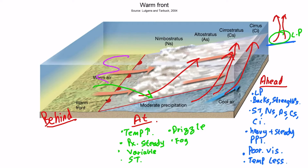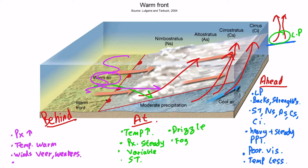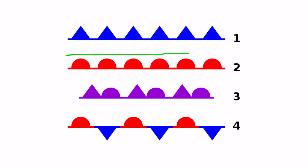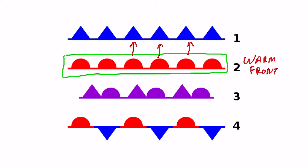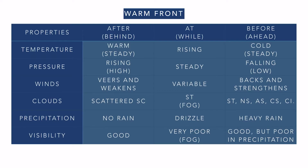Behind the warm front, after it has passed, the pressure starts to rise and the temperature is warm because the warm air that was coming behind the cold air is now over us. The winds veer and weaken. We see scattered stratocumulus clouds, there is no rain, and visibility is good. A warm front is indicated on a surface pressure chart with semicircles pointing in the direction of its motion. You can refer to the summary table — if you know the reasons for everything, you won't need to memorize all the characteristics.